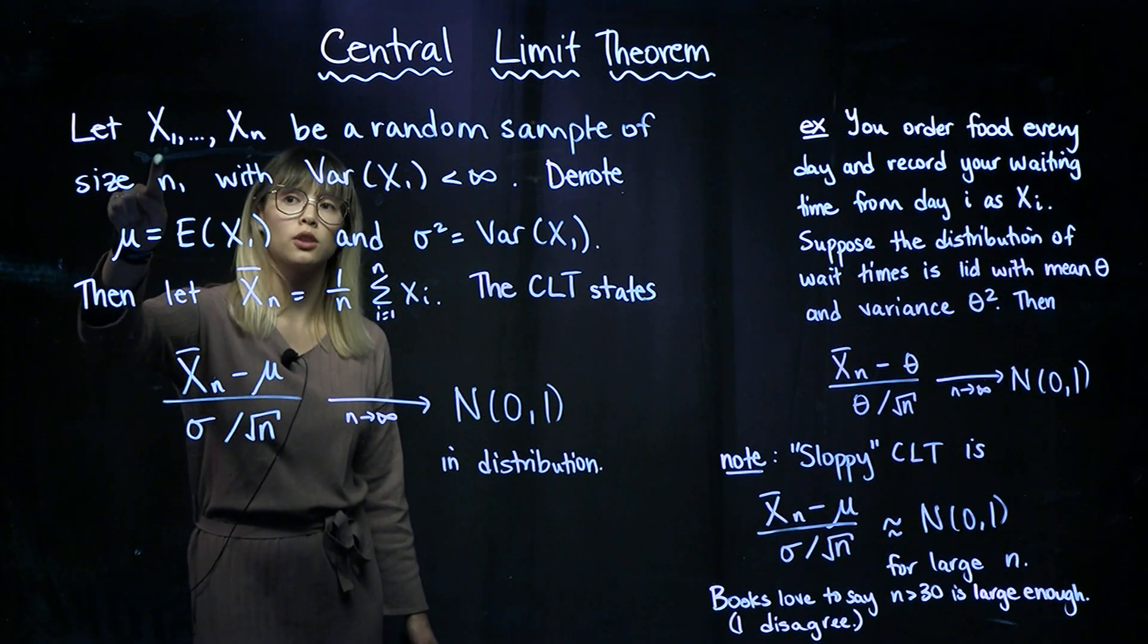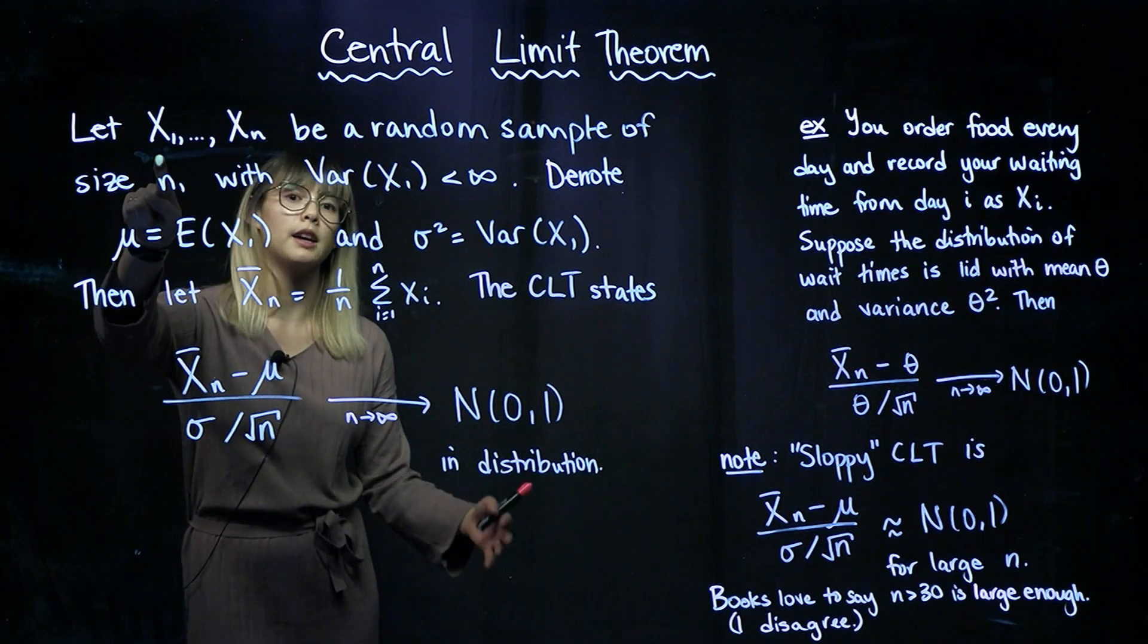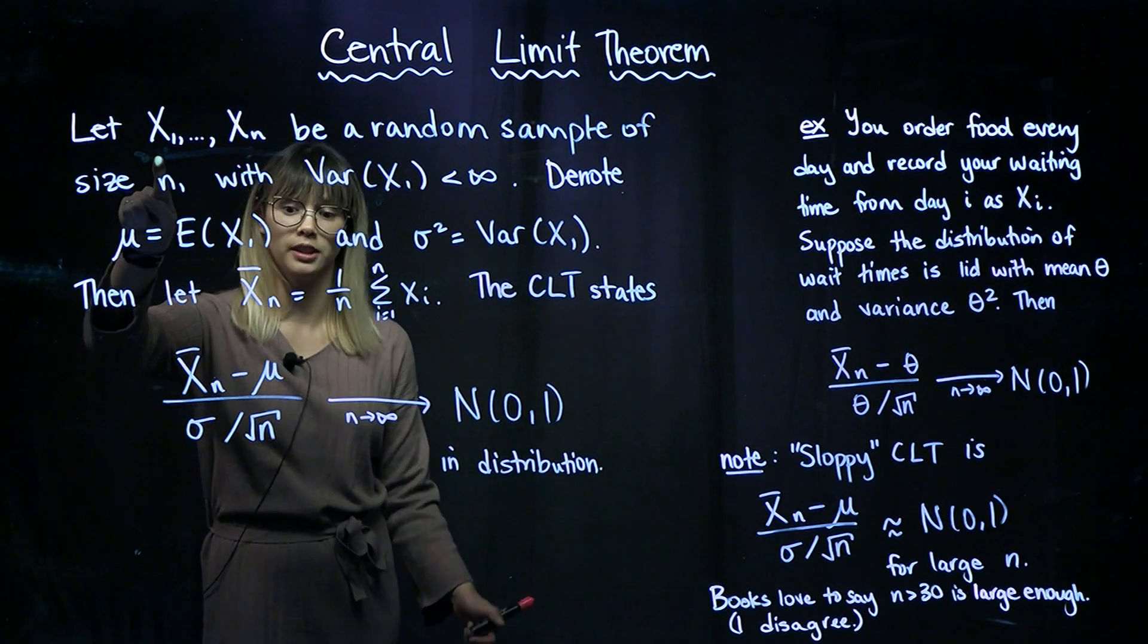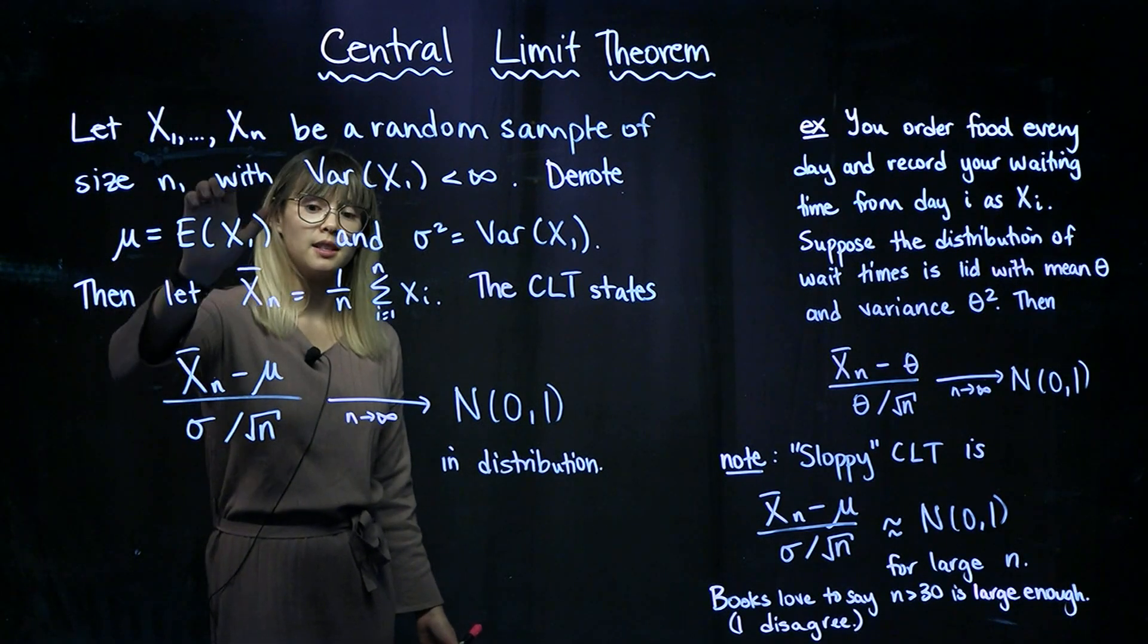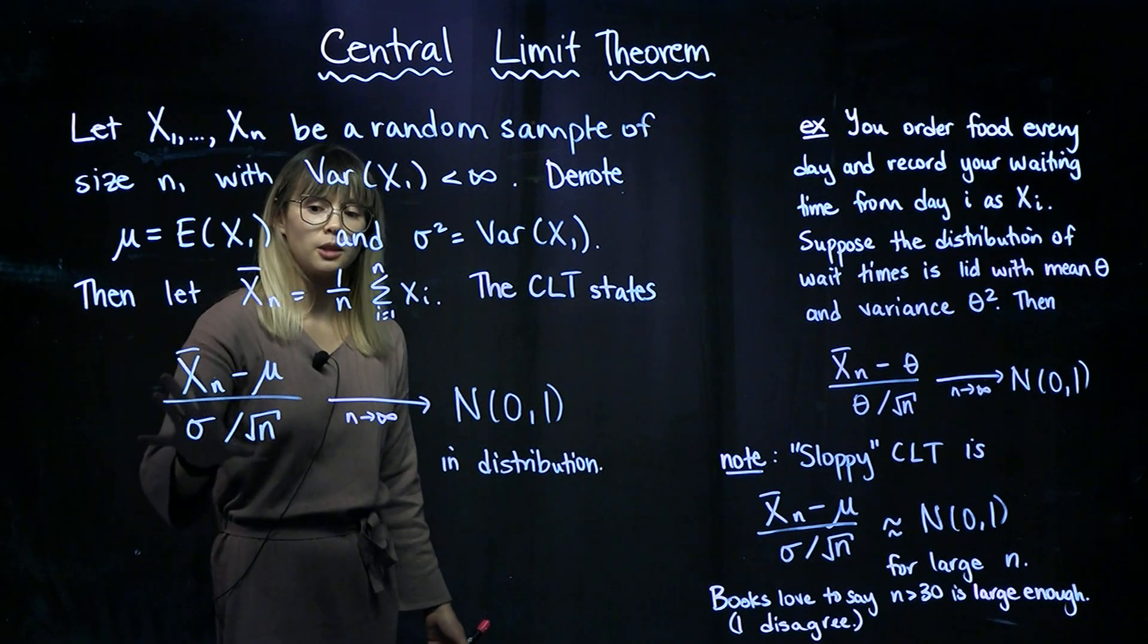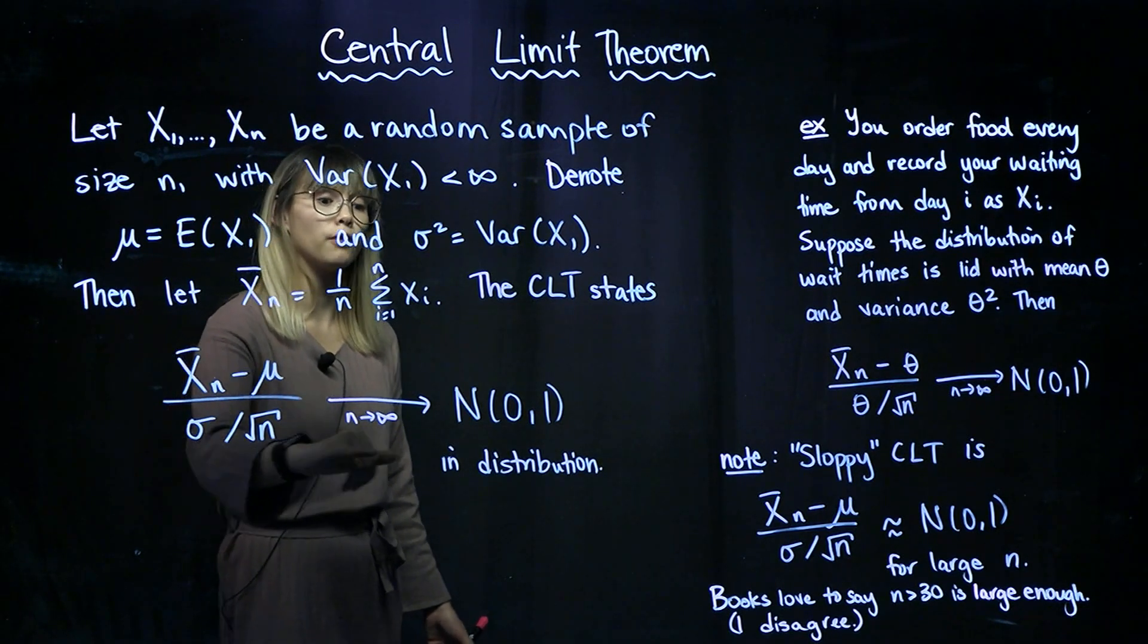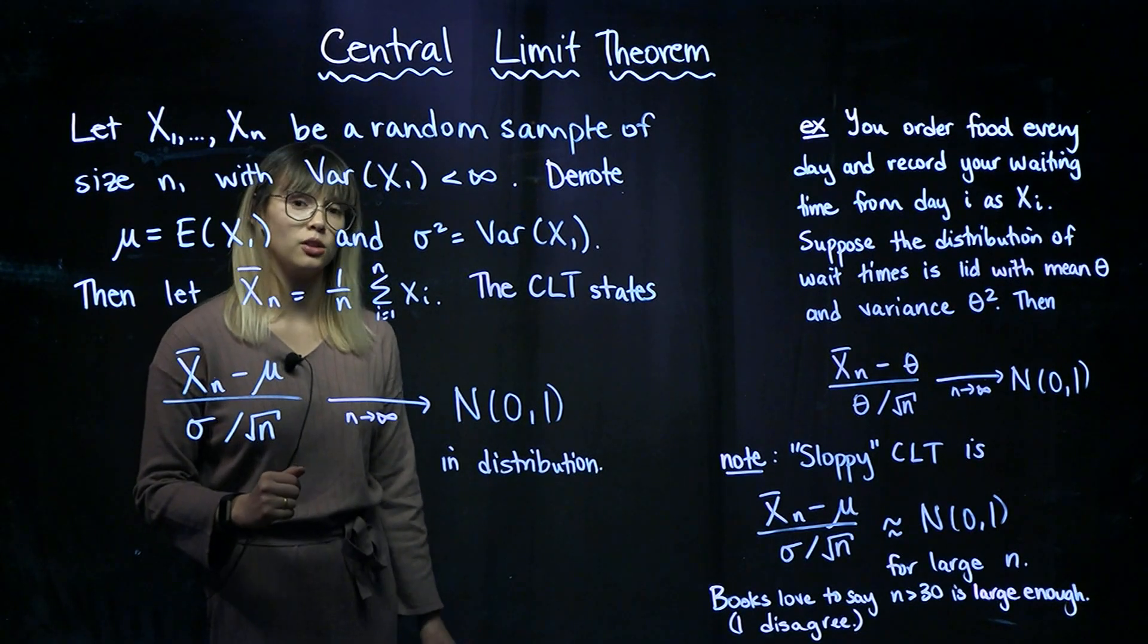So these x's could have a normal distribution, or they could have a Poisson distribution, they could have an exponential distribution, they could have any distribution, it might not even have a special name. As long as the variance of each one of these x's is finite, then x bar n minus mu over sigma over root n is going to converge to a standard normal distribution as n increases to infinity.